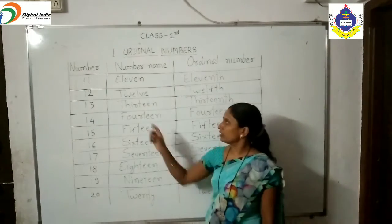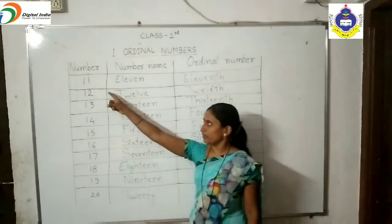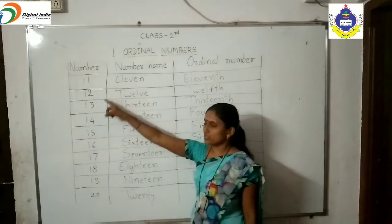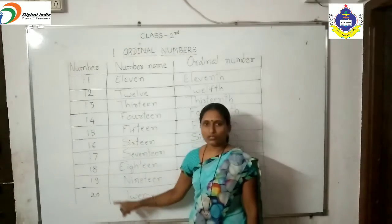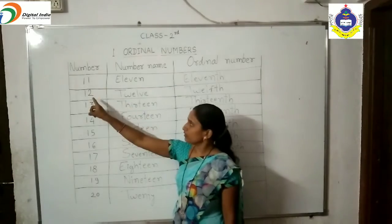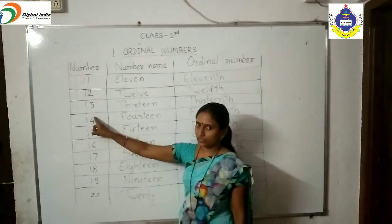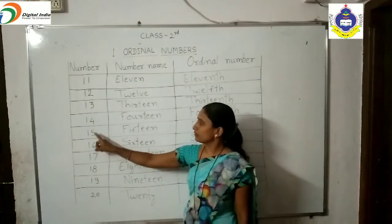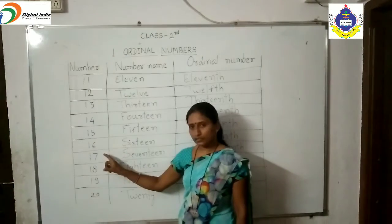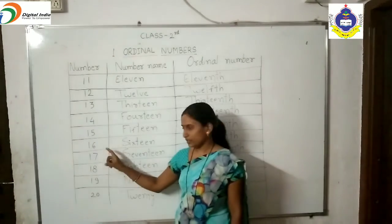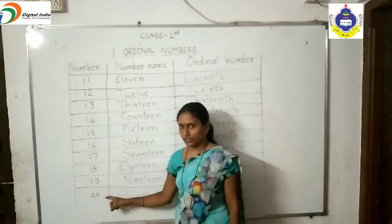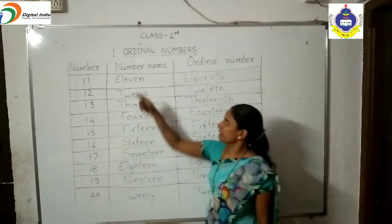Now we learn eleven to twenty ordinal numbers. In the first column, you write down the numbers: eleven, twelve, thirteen, fourteen, fifteen, sixteen, seventeen, eighteen, nineteen, and twenty.